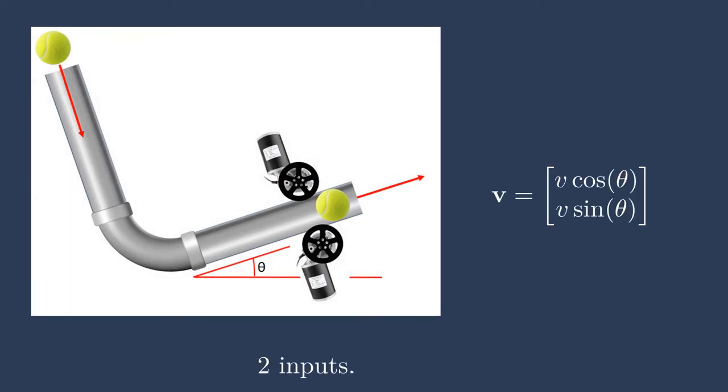Now, if we consider the physics of a tennis ball launcher in two dimensions here, we can think about this as a model which has multi-dimensional input and multi-dimensional output. Let's say that we have the ability to control the speed of the tennis ball at the exit as well as the theta value shown here, the angle of launch. If we then consider our output to be the velocity of the tennis ball, we can break it down into x and y velocities. We would then get v times cosine of theta for the x velocity and v times sine of theta for the y velocity.